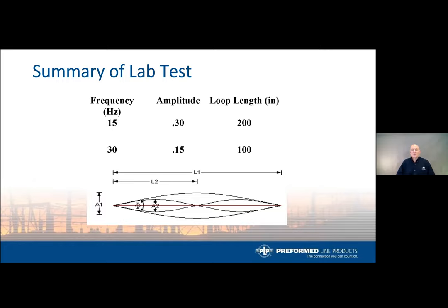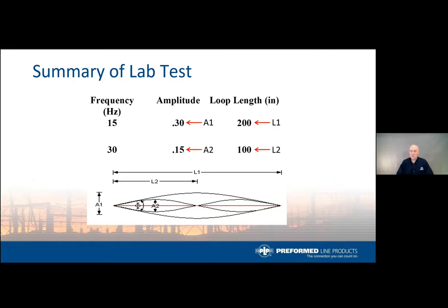In this example, the conductor was vibrated at the first natural frequency of 15 Hz. Amplitude A1 is 0.3 and loop length L1 is 200 inches. Increasing to the next natural frequency at 30 Hz — double the initial frequency — we found that A2 and L2 were each halved. As frequency doubles, amplitude and loop length are linear and basically cut in half.